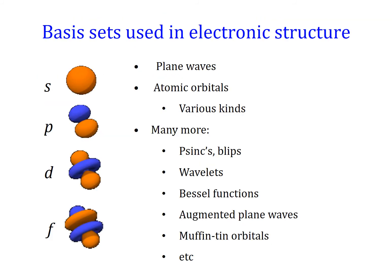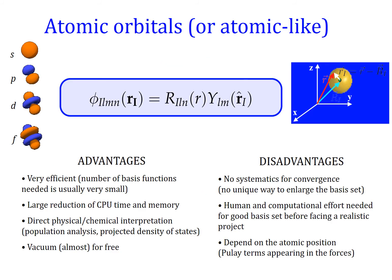The most popular basis sets in electronic structure are plane waves and atomic orbitals of various kinds. We are going to concentrate on atomic orbitals. The atomic orbitals are defined as wave functions in real space: a product of a radial shape depending on the distance to a center — typically placed on a nucleus but not necessarily — and an angular dependence expressed with spherical harmonics as eigenstates of angular momentum. The most important advantage is probably that they are very efficient: you need comparably few functions to get quite accurate results, which reduces CPU time and memory.